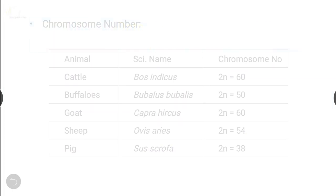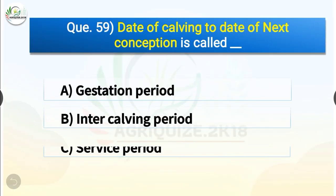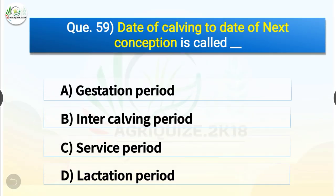Question number 59. Date of calving to date of next conception is called dash. The options are gestation period, intercalving period, service period or lactation period. The correct answer is option C, service period. So date of calving to date of next conception is called service period.